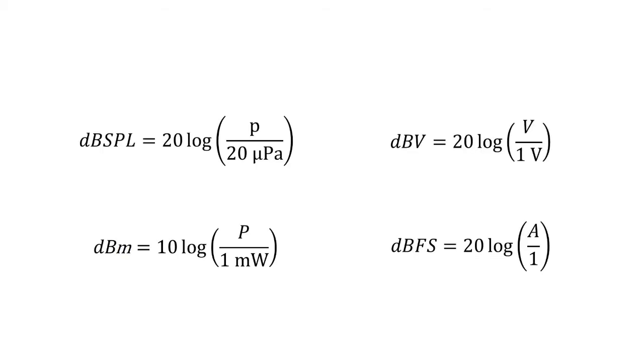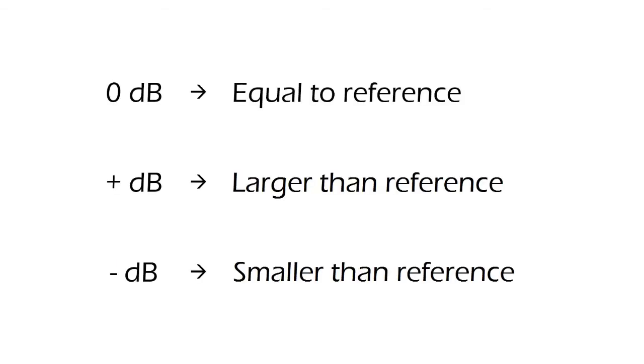There are different types of decibels, which are relative to a different reference. This reference is very important, as the meaning of the decibels depends on it. The general rule is that 0 decibels means that the measurement is the same as the reference. Positive decibels mean that the measurement is larger than the reference, and negative decibels mean that the measurement is smaller than the reference.